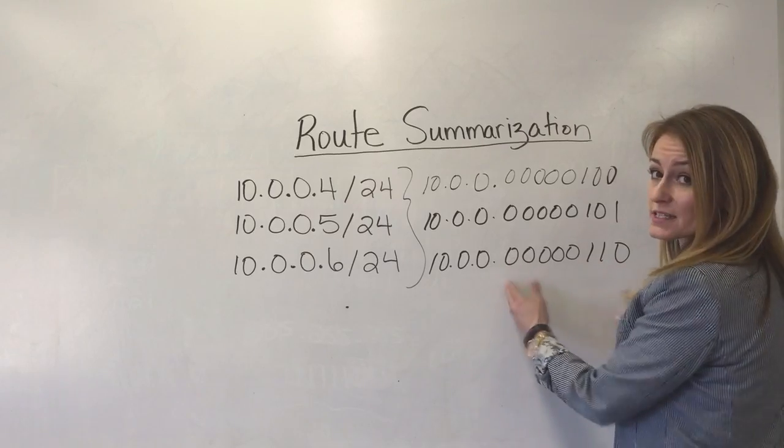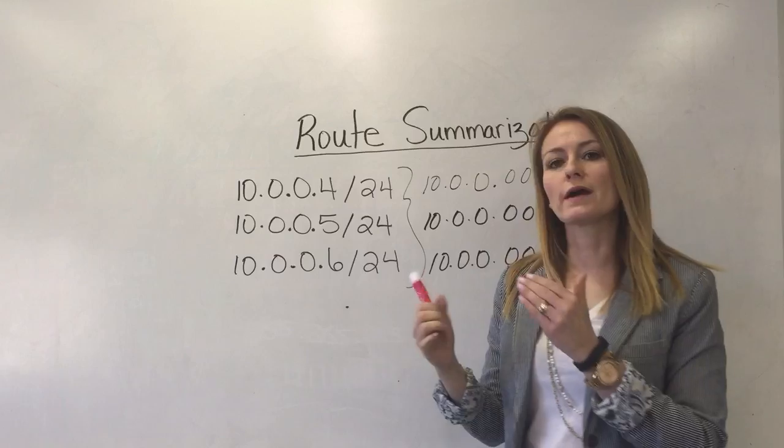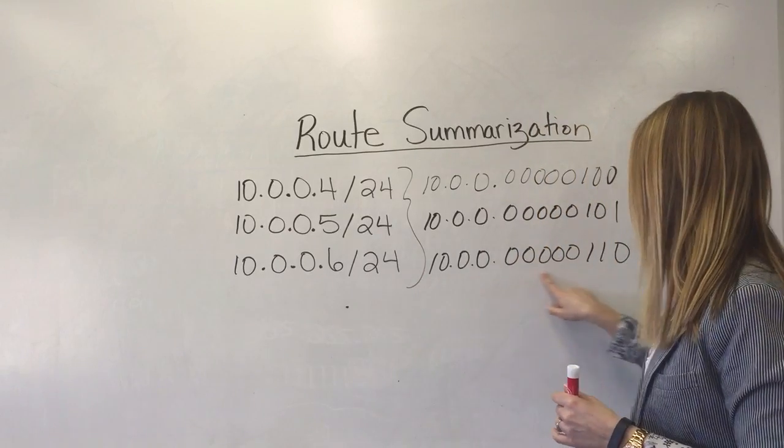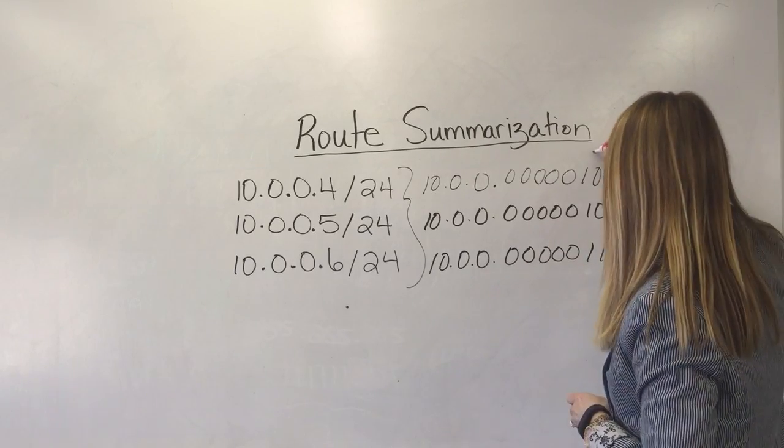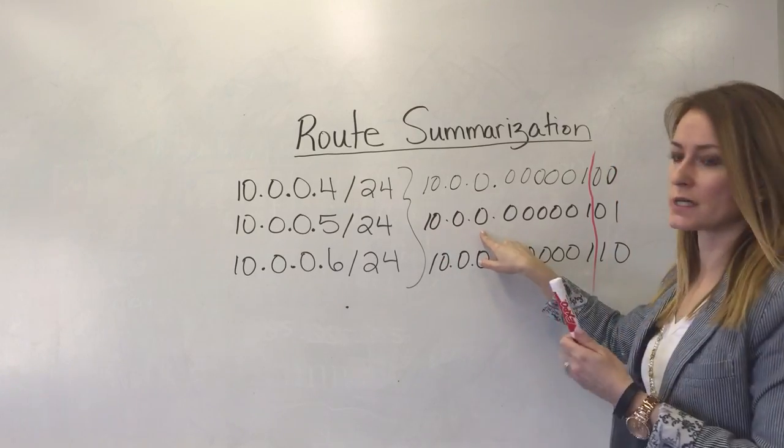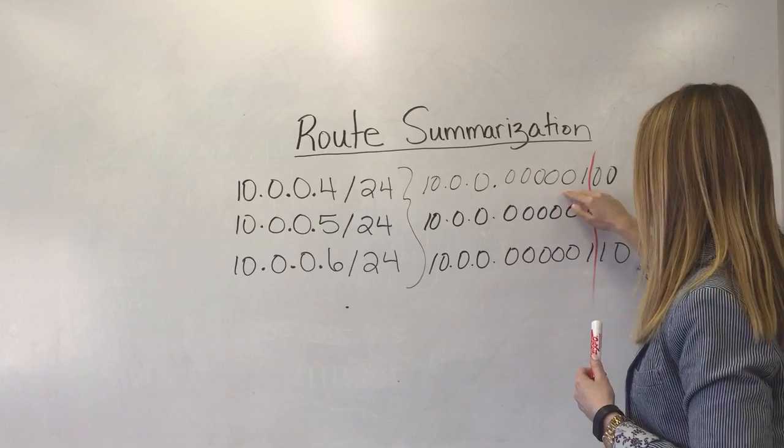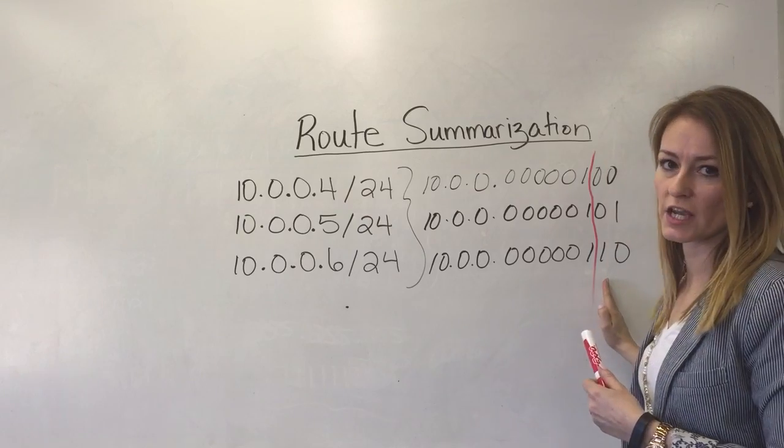So we're gonna analyze this last octet. Now the only thing we care about is where these IP addresses become different. So all the way up to here they're identical to one another. So let's draw a line where they become different. Notice the first three octets are identical. Now in the last octet they're all prefixed with a bunch of zeros and a one and then at this point is where they change.